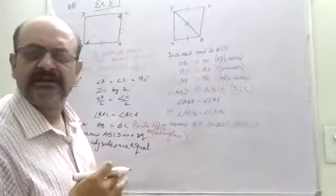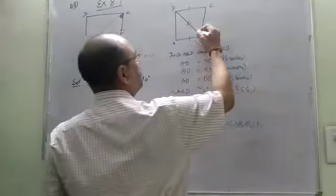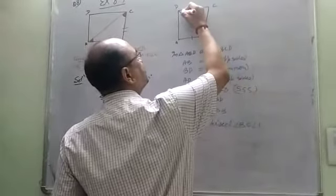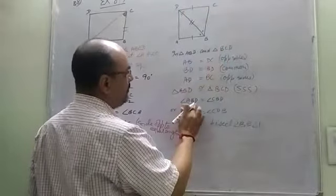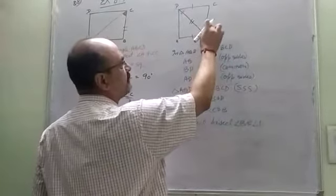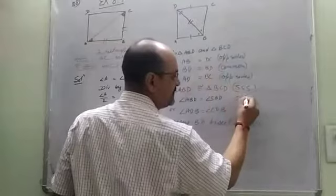What is the benefit? That means this angle is equal to this and this angle is equal to this. Angle ABD is equal to CBD, CBD to BCD.